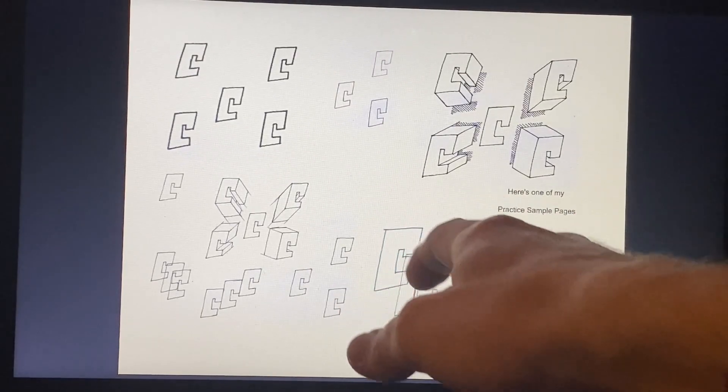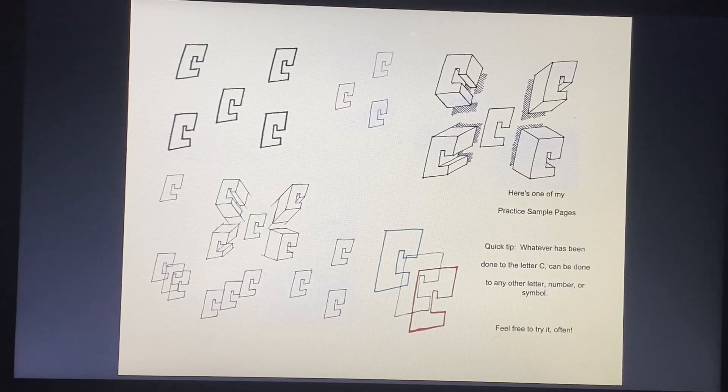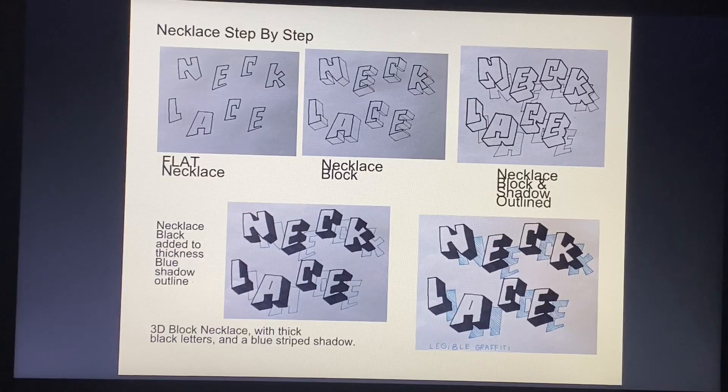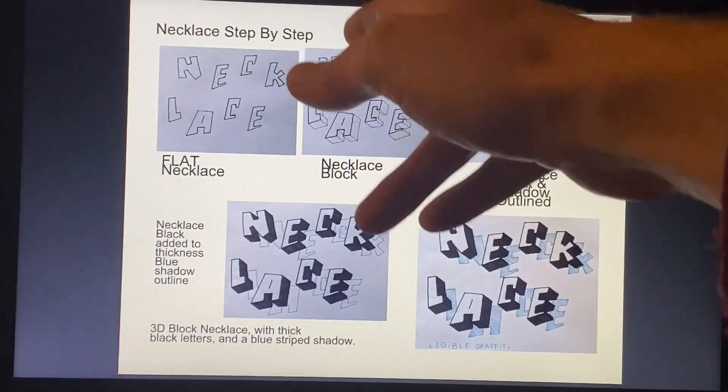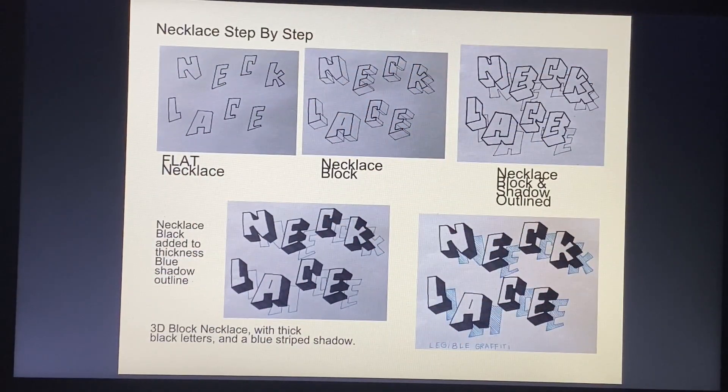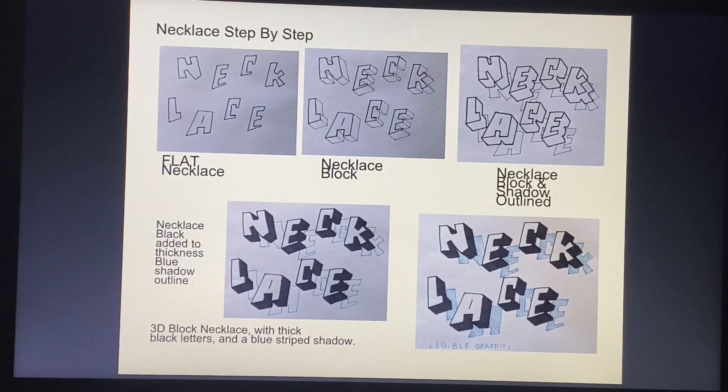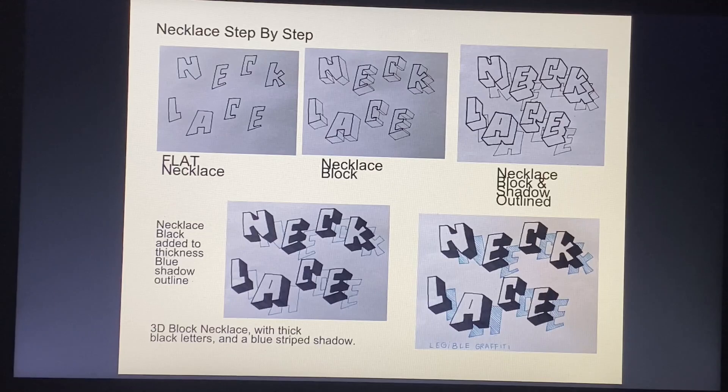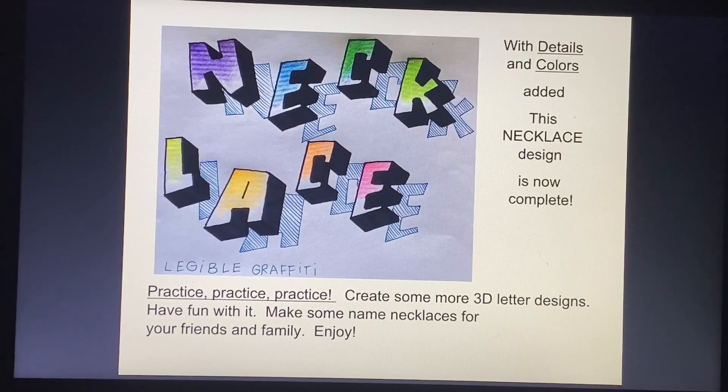What you'll see here is some stacking. That's one of the good features that legible graffiti allows you to do to create these designs. For a necklace, we started with a flat design, then we blocked it once we moved it for an angle. We followed the outer edge, we connected the corners. Once we have it blocked, we created a shadow beneath it, still using the stencil underneath it. So for all of this, you're going to see a lot of the same letters used over and over.